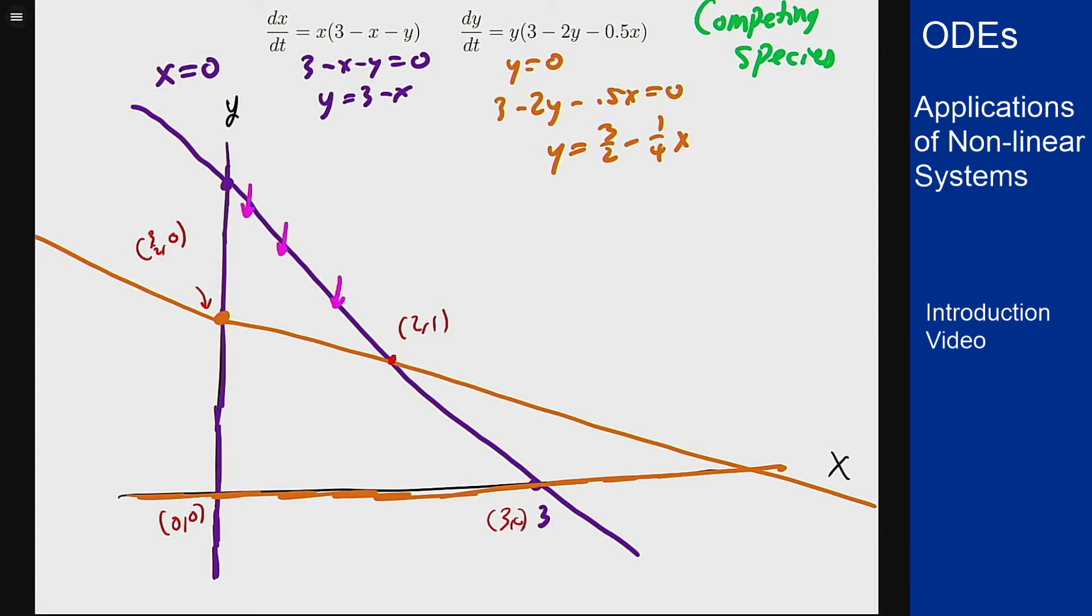Because my y derivative is negative and my x is 0. I can also check down here and see that on that side I'm moving upward. We can do the same checks for the orange lines.